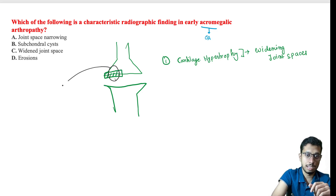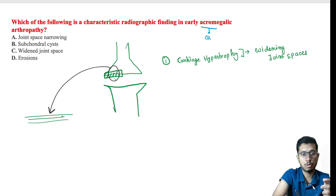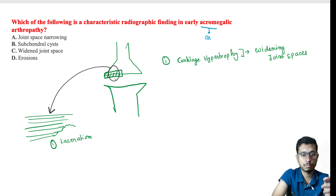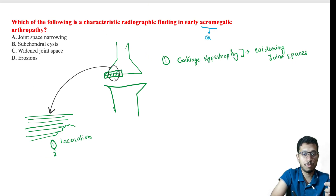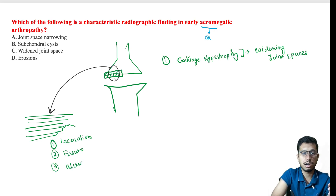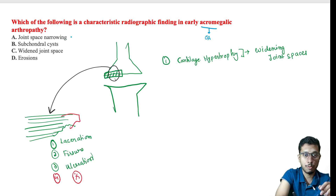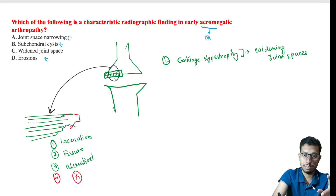Later, as cartilage undergoes more hypertrophy and fiber accumulates, a phase comes where there is laceration in the cartilage tissue. This laceration leads to fissure formation and ulceration, ultimately causing complete destruction of the cartilage. Following cartilage destruction, there is joint space narrowing, subchondral cyst formation, and erosions.